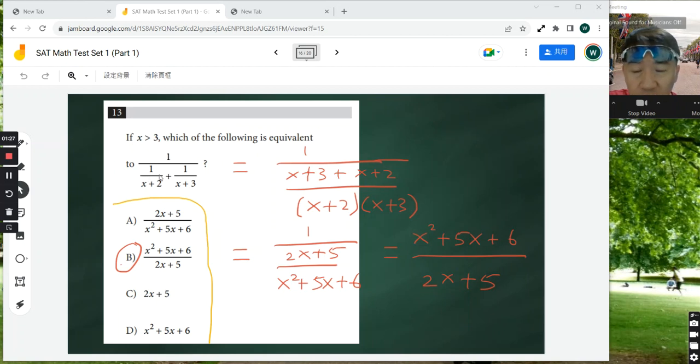So you have 2 fractions and they have different denominators. So you want to find the common denominator. And in fact, in this case, the common denominator is simply the product of the 2, which is x plus 2 times x plus 3.